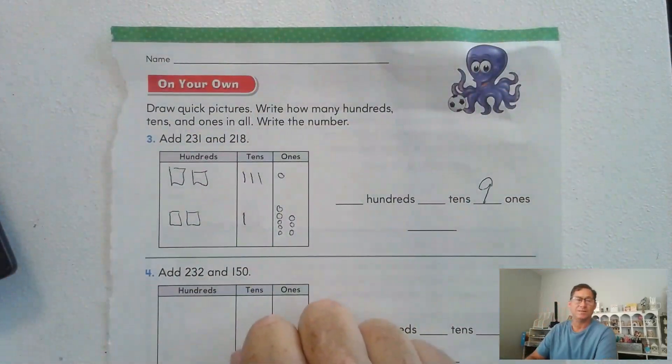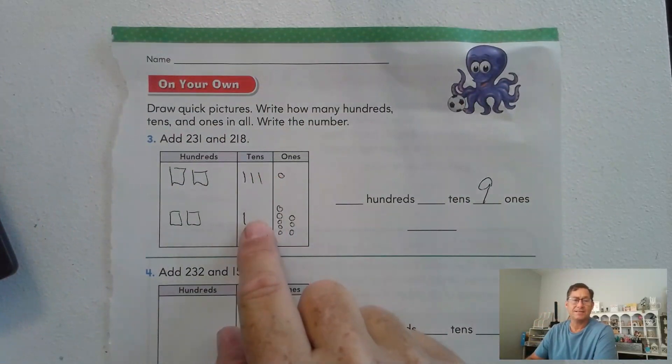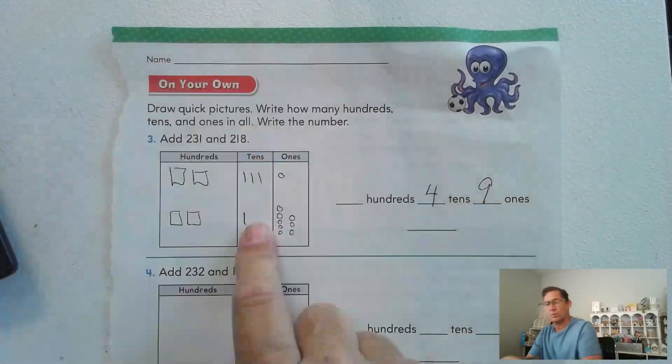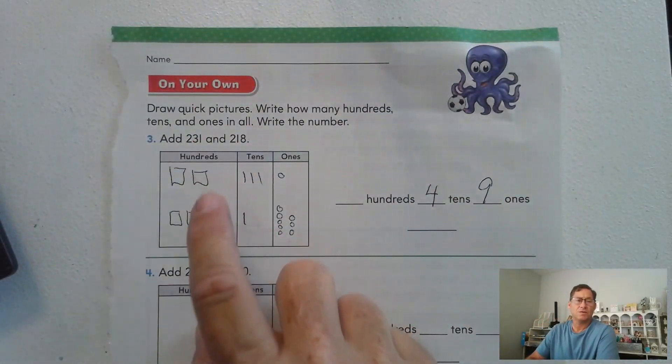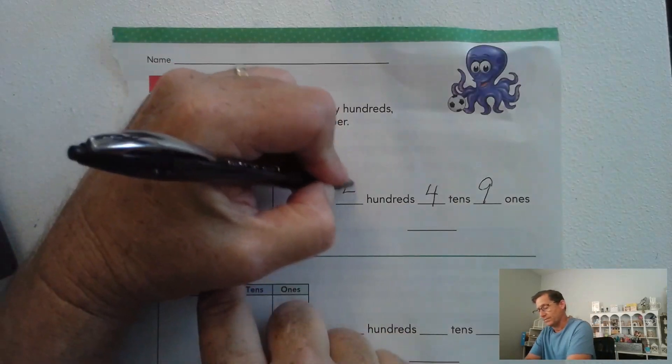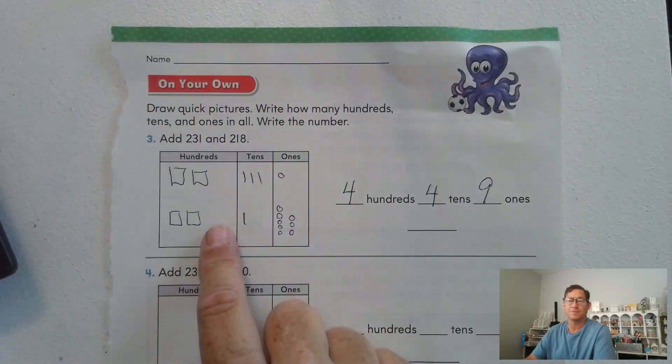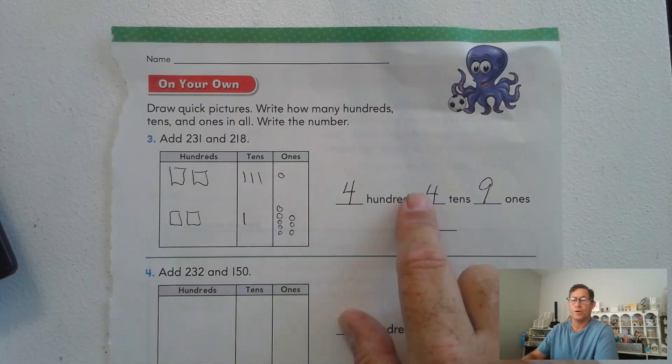So we have eight ones and one one for a total of nine ones. We have three tens and one ten for a total of four tens. We have 200 and 200 for a total of 400. So we have 449.